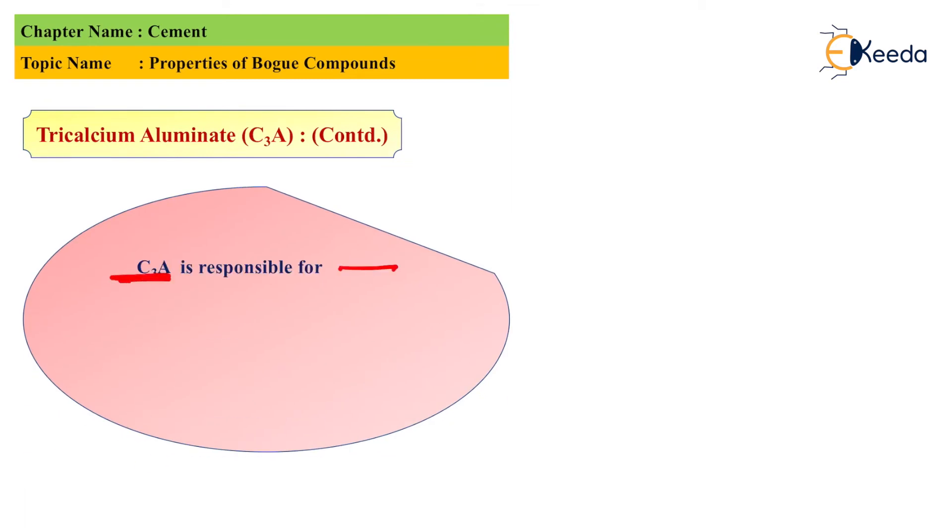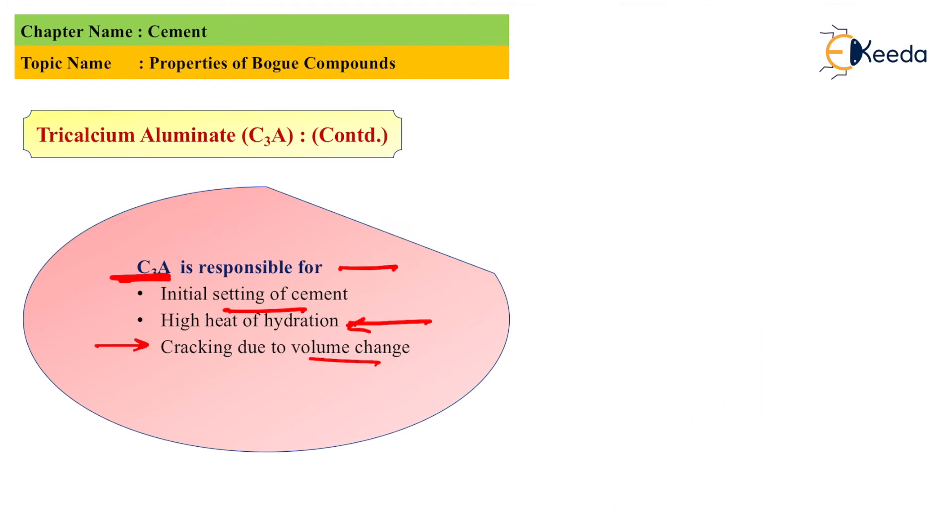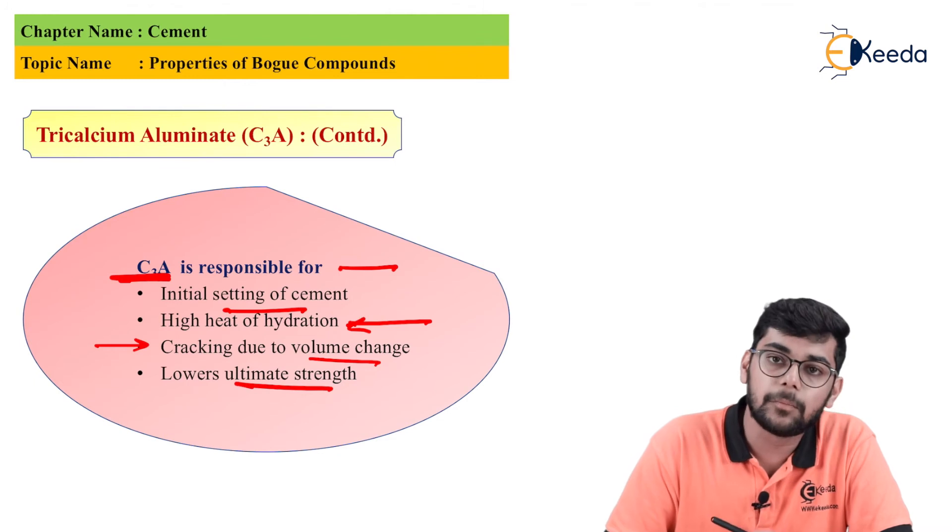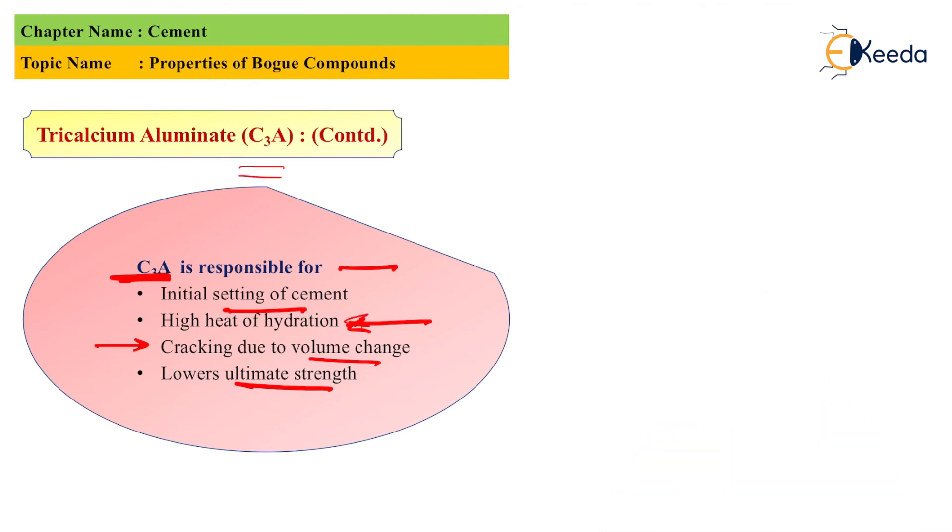C3A is responsible for initial setting of cement and high heat of hydration. C3A causes excessive volume change which could lead to cracking. C3A gives lower ultimate strength because it is responsible for initial set or flash set. C3A is responsible for high heat of hydration, and that is 865 joules per gram.